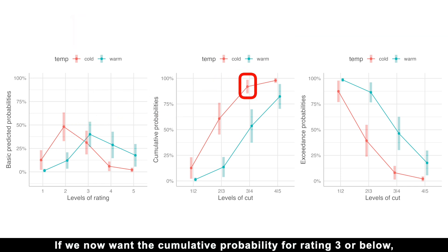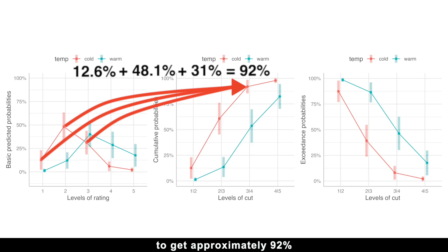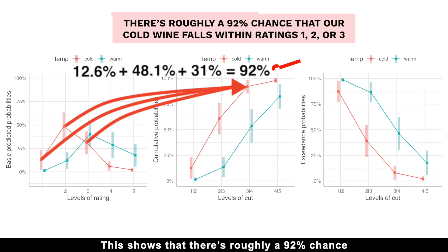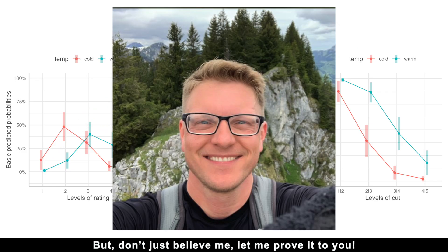This means there is a 60% cumulative probability that the wine rating is 2 or below. If we now want the cumulative probability for rating 3 or below, we simply add the probabilities of ratings 1, 2, and 3 to get approximately 92%. This shows that there is roughly a 92% chance that our cold wine falls within ratings 1, 2, or 3. But don't just believe me. Let me prove it to you.